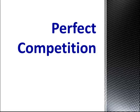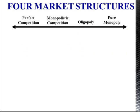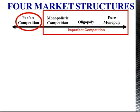Hi, this is Mrs. Miller again, and we're going to be talking today about perfect competition. Perfect competition is the first of four market structures. The other structures are considered to be imperfect competition.